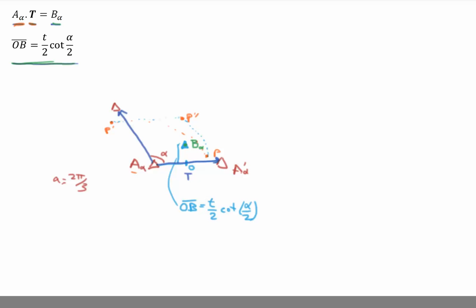So in this case, alpha is 2π over 3. So this expression equals t over 2 cotangent of π over 3, which is the same as the square root of 3 over 6 times t.